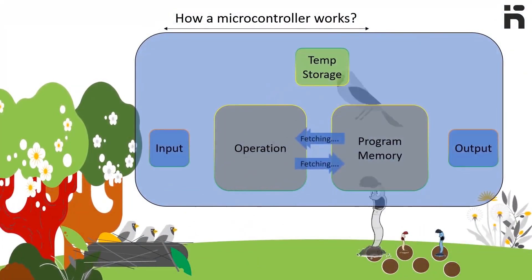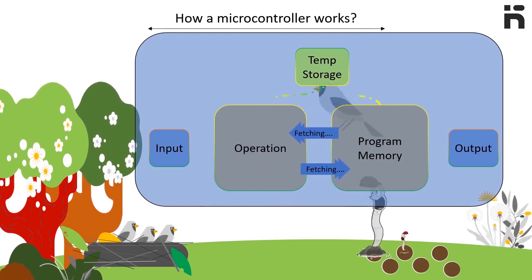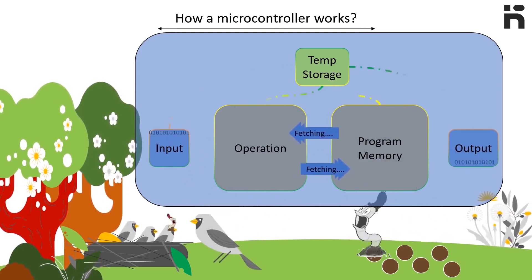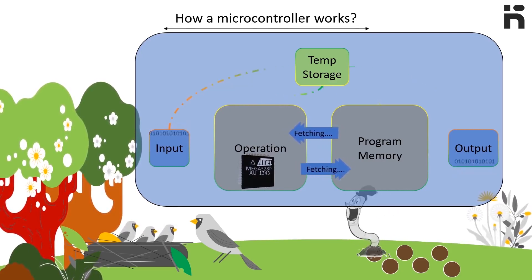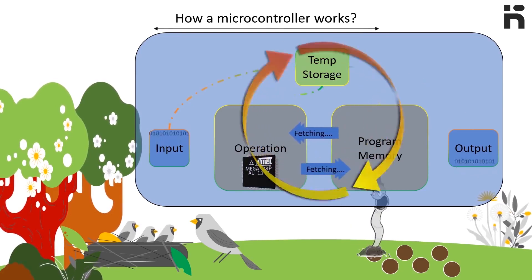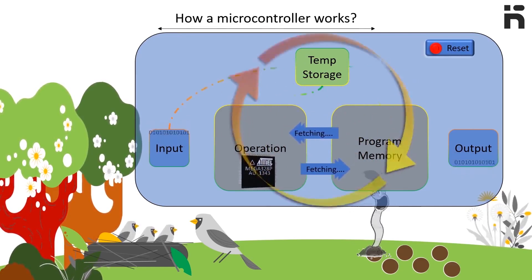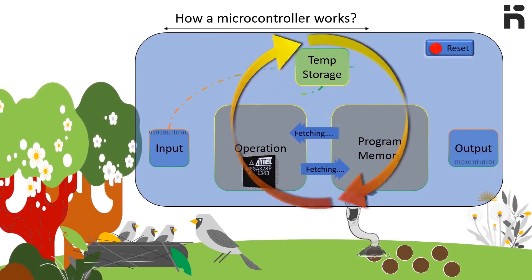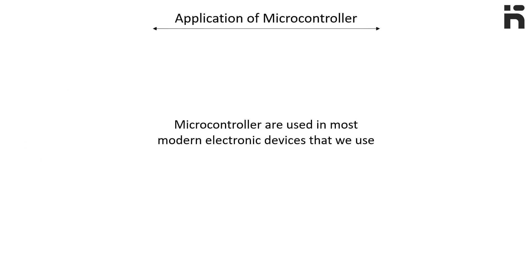In the full cycle of a microcontroller, first an operation is fetched from the program memory. This operation accesses data from temporary storage for inputs and outputs as ones or zeros. The operation is then executed by the processor core as the next instruction is simultaneously being fetched. New instructions are fetched and executed, and this cycle repeats until the board finishes running. When the microcontroller resets, the entire cycle starts again. Microcontrollers are used in most modern electronic devices we use on an everyday basis.